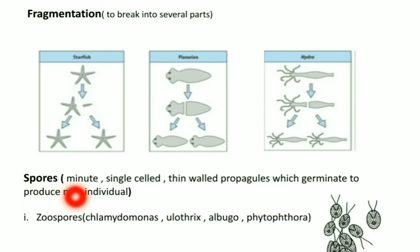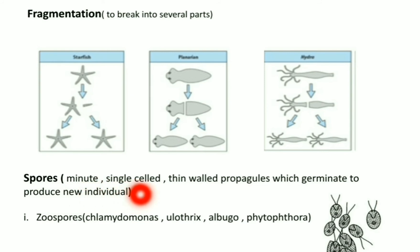Spores are single-celled thin-walled propagules which germinate to produce new individuals. Zoospores are a special kind of spore which are motile, have flagella, and are produced inside zoosporangia. They can swim in aquatic habitats and are helpful in dispersal. Zoospores are seen in Chlamydomonas, Ulothrix, Albugo, Phytophthora, etc.